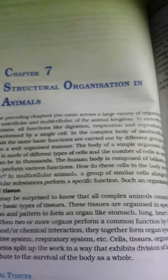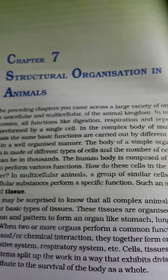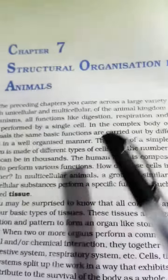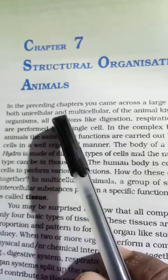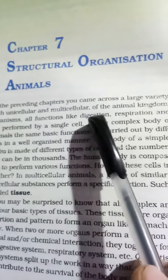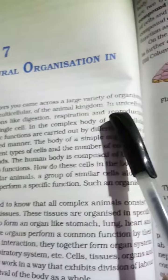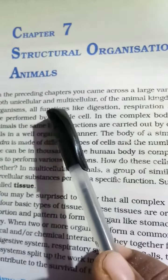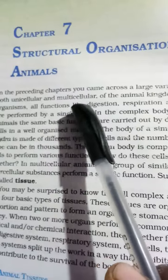Dear biology aspirants, right now I have Chapter 7: Structural Organization in Animals. Knowledge will be provided. In the preceding chapters, you came across a large variety of organisms, both unicellular and multicellular.